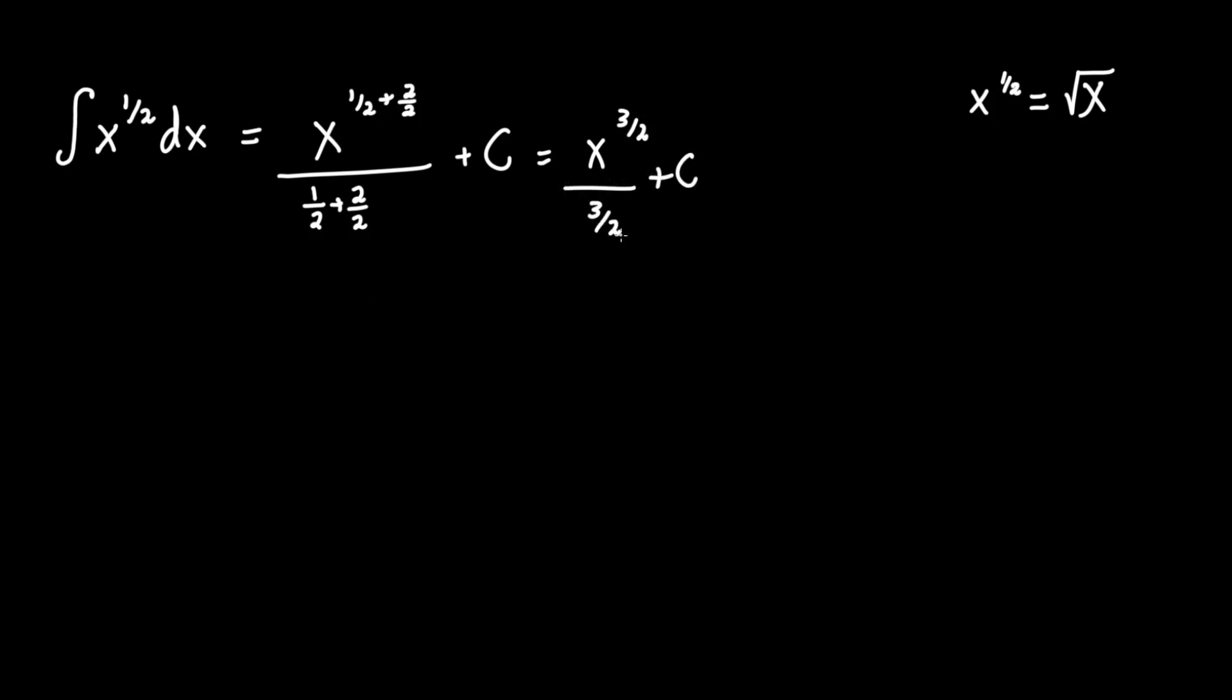If you want to simplify that a little more, what you could do is multiply the denominator by 2 and the numerator by 2. What that does is effectively multiply it by 1, the entire fraction, and what you get is 2/3 x to the 3/2.